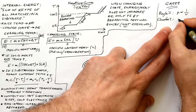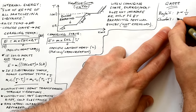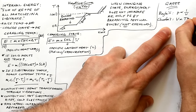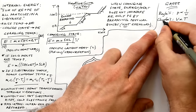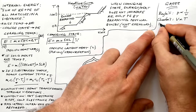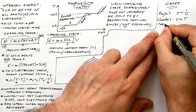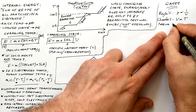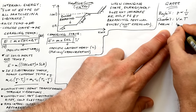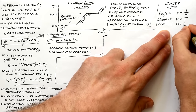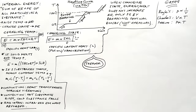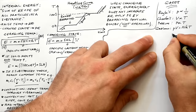The gas laws: Boyle's law — pressure is inversely proportional to volume, for a constant temperature. Charles's law — volume proportional to temperature, for a constant pressure. The pressure law, sometimes called the Gay-Lussac law — pressure is proportional to temperature for a constant volume.